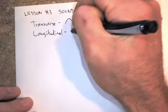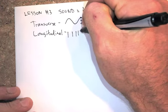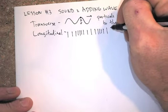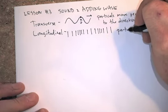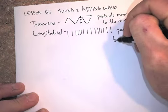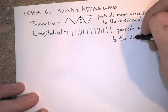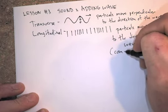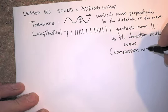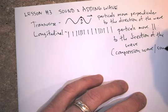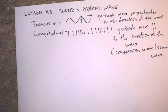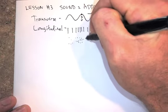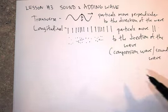Longitudinal is more like a compression wave. You could represent it with lines that get closer and closer together, and then get farther and farther apart, and then back close together. Particles move parallel to the direction of the wave. This is more like a compression wave or sound wave — a sound wave where the particles move sideways, far apart, then closer and closer together, then far apart again. That's kind of how a sound wave moves through the air, moving this way with the particles moving back and forth.